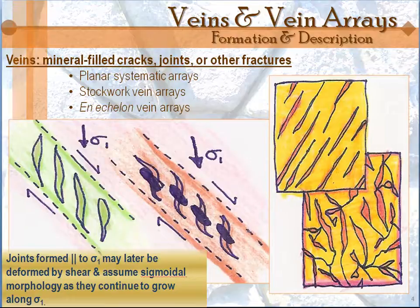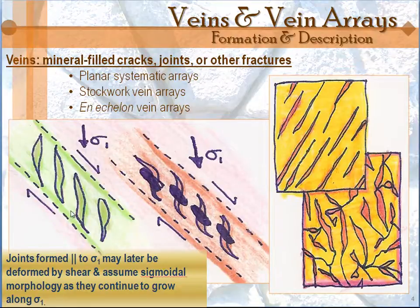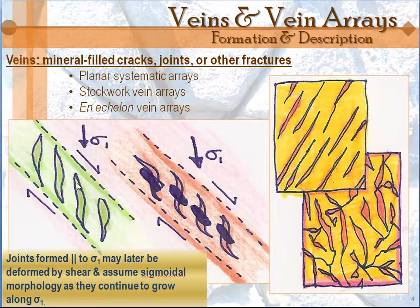These en-echelon arrays can also develop as a consequence of shear in the rock body, and this is associated with displacement across a fault zone. The fractures that comprise this array usually initiate parallel to sigma-1, and at about 45 degrees to the shear. This is the shear that's represented in the rock, and they open up because of the tensile stresses when you've got this displacement — movement this way, movement that way. Tensile stresses are created, and these little cracks developed parallel to sigma-1 can open up later to be filled with mineral.